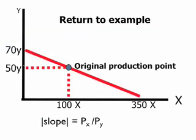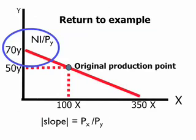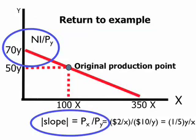Let's go back to the earlier example to have an application of this equation. The Y-intercept is 70Y, which is the national income divided by the price of Y. That is to say, $700 divided by the price of Y. And where the slope of this line is, once again, the ratio of the relative prices, or one-fifth Y per X.